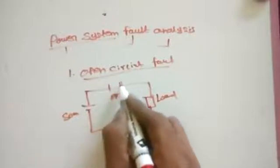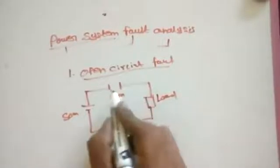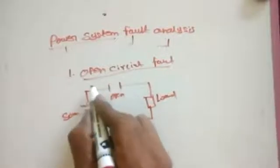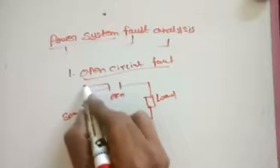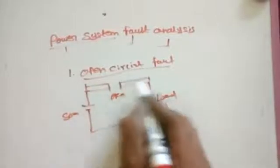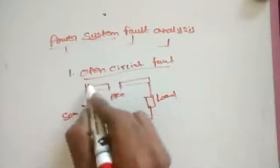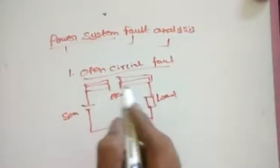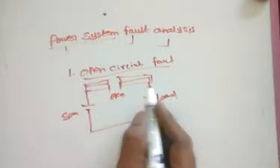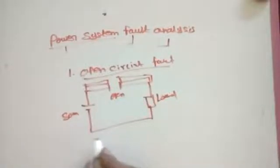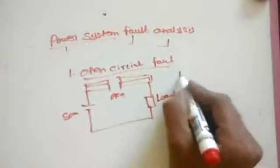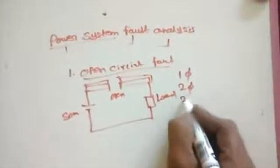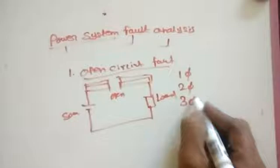This is called an open circuit fault. For example, in a single phase system, this is called a single phase open circuit. In a three phase system, if two phases are open, that is called a three phase open circuit fault. There are three types: single phase open circuit fault, two phase open circuit fault, and three phase open circuit fault.